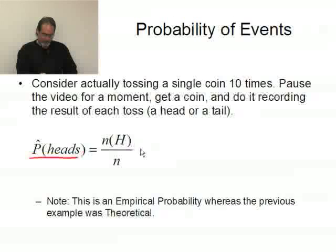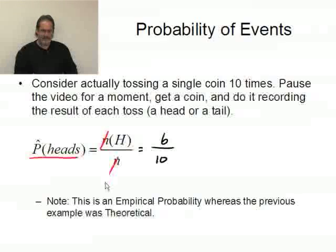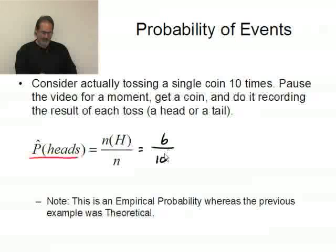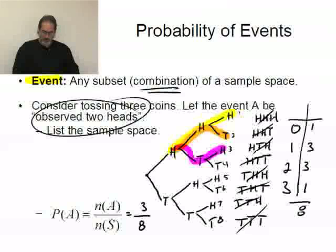I just happened to have done this before I started today. When I tossed a quarter ten times, I ended up with N of H equaling six — there were six heads out of ten tosses, meaning four times I saw a tail, and N is ten. Notice I'm not canceling out N's — this is not algebraic; it's not N times H. The number of heads was six, and the number of times I did it was ten, so that probability is six out of ten. This was an empirical probability — I actually flipped a coin. The three-coin situation over there was theoretical, not empirical — it's what, in theory, should happen.